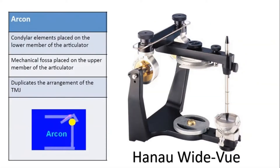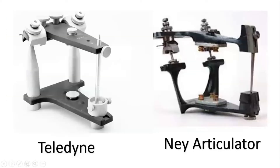The most popular example of an arcon-type articulator is the Wideview articulator. You can see that the condylar element is attached to the lower member and the condylar guidance is attached to the upper member. Other examples of arcon articulators are the Teledyne articulator and the Knie articulator, where similarly the condylar guidance is on the upper member and condylar elements are on the lower member.